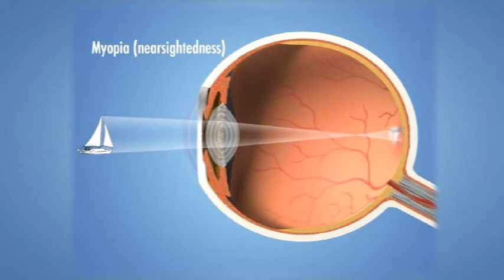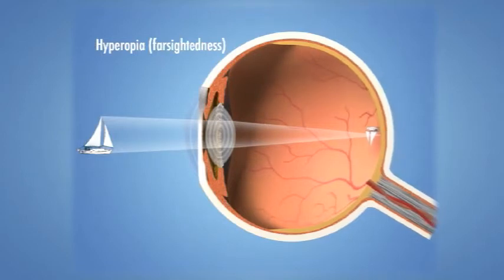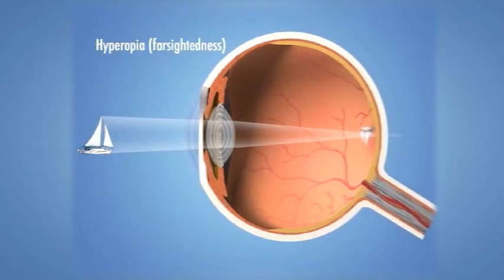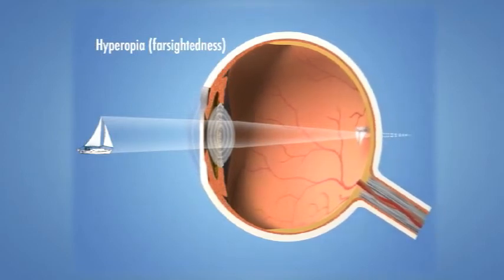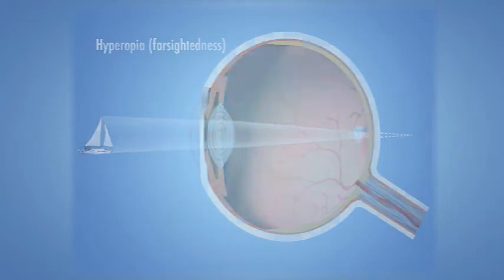With myopia, close objects will look clear, but distant objects will appear blurred. Hyperopia, or far-sightedness, is where the distance between the cornea and the retina is too short. Here, light rays are focused behind the retina instead of on it. Distant objects will look clear, but close objects will appear blurred.